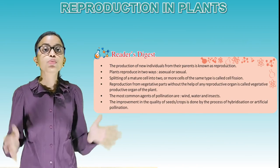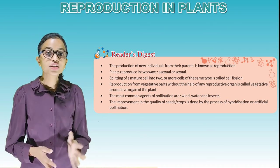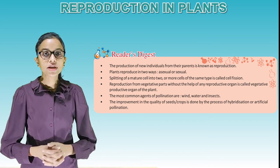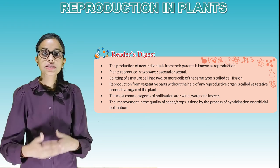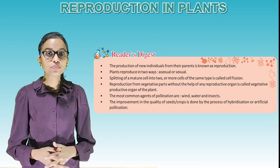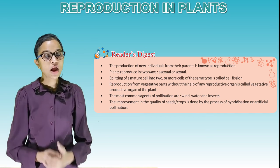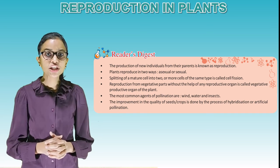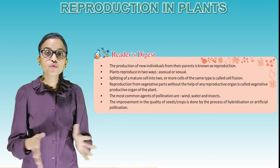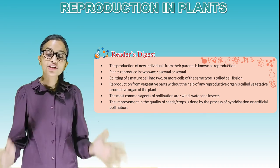Recap: The production of new individuals from their parents is known as reproduction. Plants reproduce in two ways: asexual or sexual. Splitting of a mature cell into two or more cells of the same type is called cell fission. Reproduction from vegetative parts without the help of any reproductive organ is called vegetative propagation. The most common agents of pollination are wind, water and insects. The improvement in the quality of seeds or crops is done by the process of hybridization or artificial pollination.